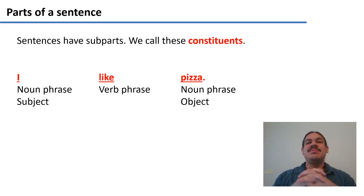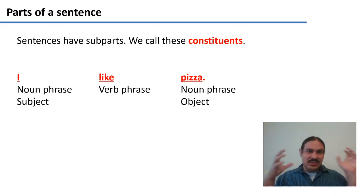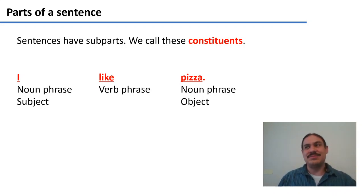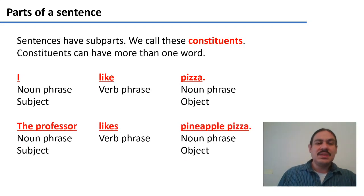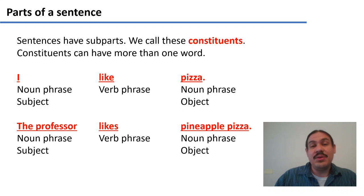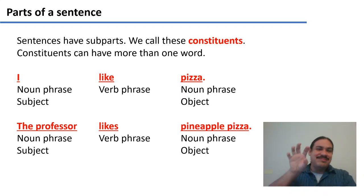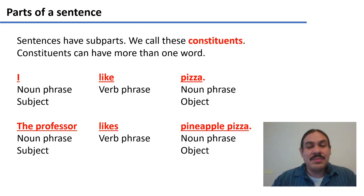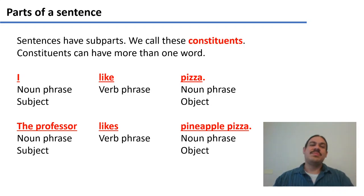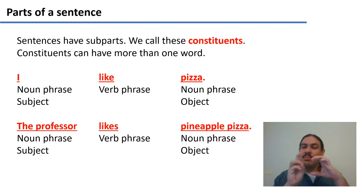We call them constituents because they are pieces of language that make sense on their own. Constituents can have more than one word in them — the subject could be 'the professor,' a noun phrase with two words. The object could be 'pineapple pizza,' another noun phrase with two words. So noun phrase constituents can be composed of one word or more words.